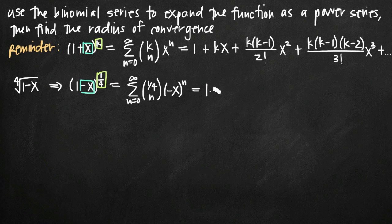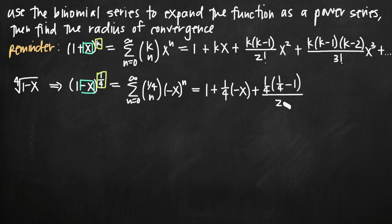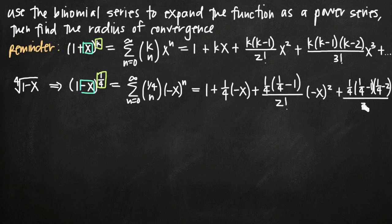Because we replaced k with 1/4 and x with negative x, we do that on the right-hand side where we've listed out the first several terms of the binomial series. Our new binomial series is going to be 1 plus 1/4 times negative x, plus 1/4 times (1/4 minus 1) all divided by 2 factorial times (negative x) squared, plus 1/4 times (1/4 minus 1) times (1/4 minus 2) all divided by 3 factorial times (negative x) cubed.